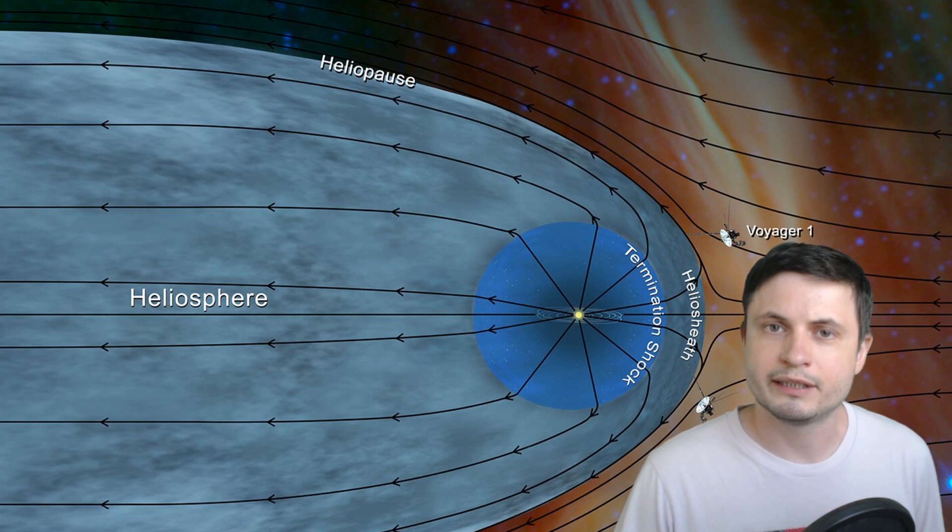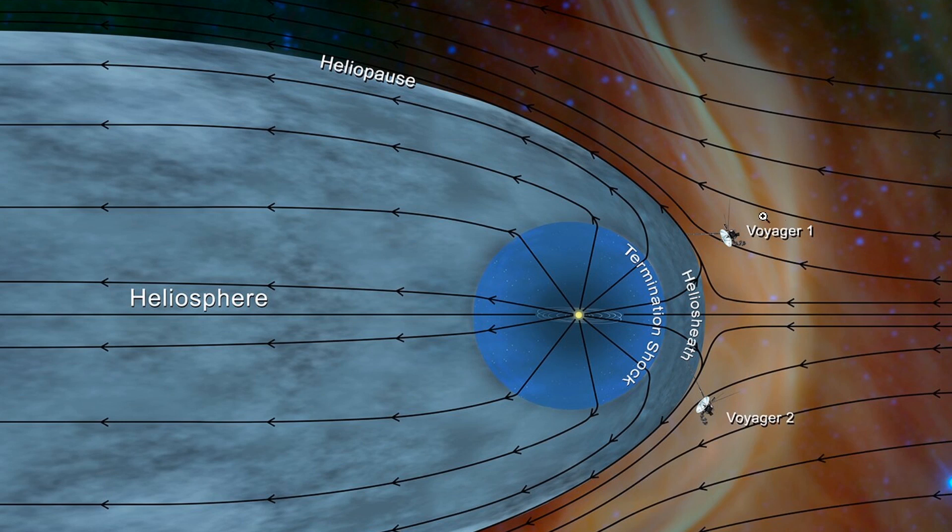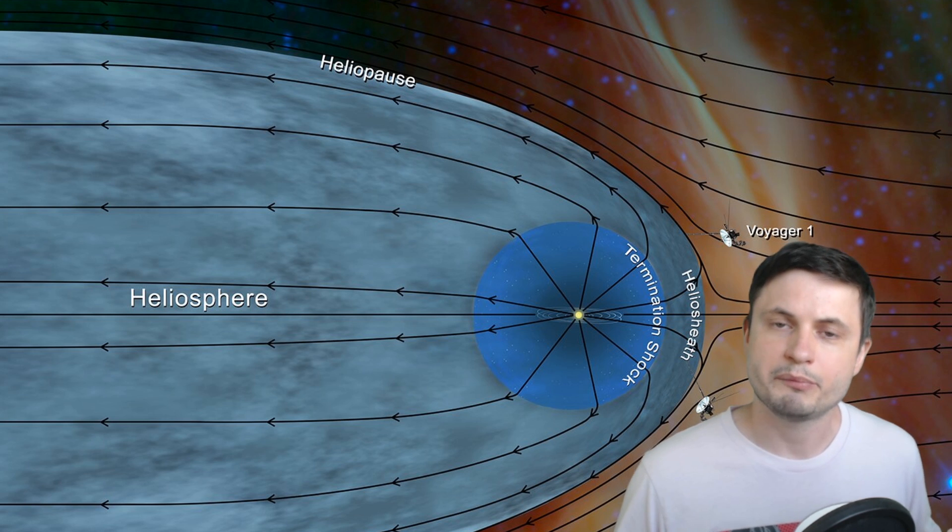Also not so long ago we discovered that the interstellar space, which both Voyager 1 and Voyager 2 are currently traveling across, where the temperature also suddenly jumps up quite dramatically by like a huge value.